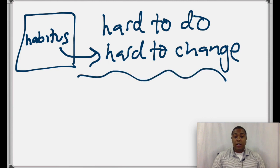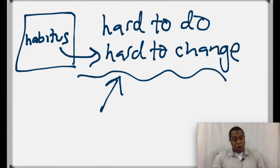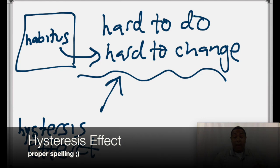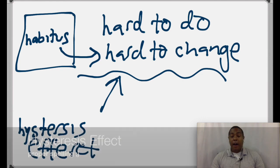All of this is a result. And that effect is called the hysteresis effect. The hysteresis effect. The hysteresis effect is the result of the structured structures and the structuring structures that make it difficult to change. The hysteresis effect is the result of all those social processes that we've been talking about and that we will continue to talk about in this class.